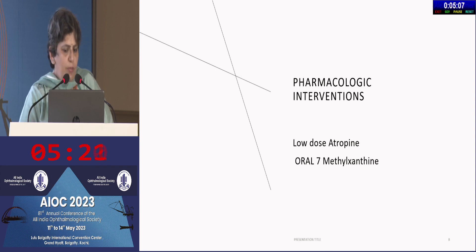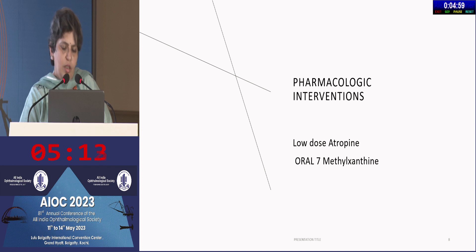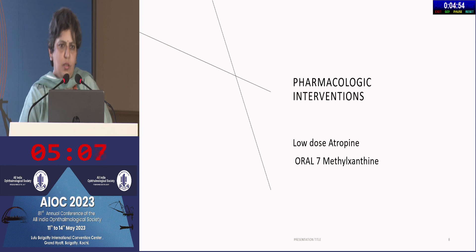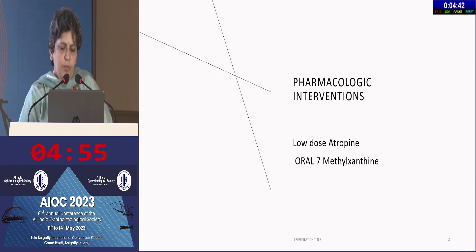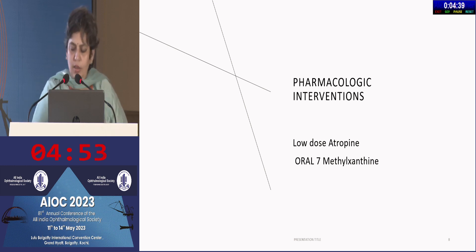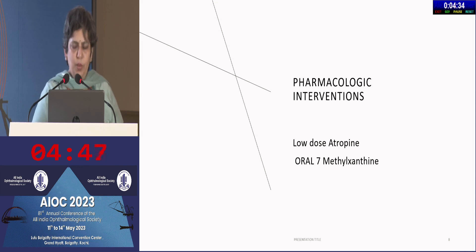For pharmacological intervention, basically low-dose atropine is the mainstay. In India it's only commercially available in 0.01%, but in other countries it's available in 0.02%, 0.05%, and several other compounded products. The 0.01% concentration is still very effective — up to 60% reduction in myopia progression. Oral 7-methylxanthine is available only in some European countries and has not been proved as effective as atropine, but has been tried.